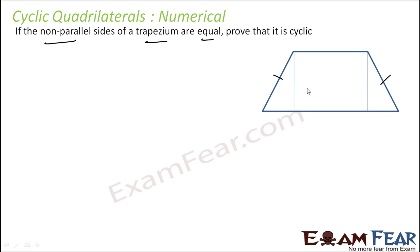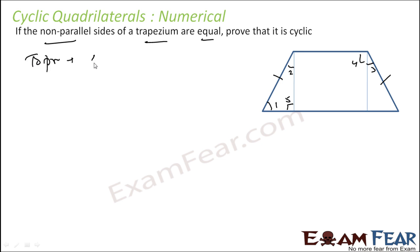Let us label the angles: angle 1, angle 2, angle 3, and the two 90-degree angles be angle 4 and angle 5. We have to prove angle 1 plus angle 4 plus angle 3 is 180 degrees to make it cyclic.